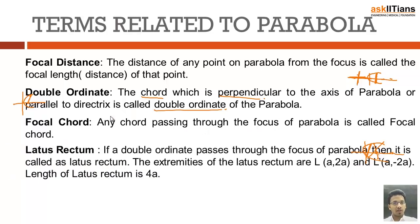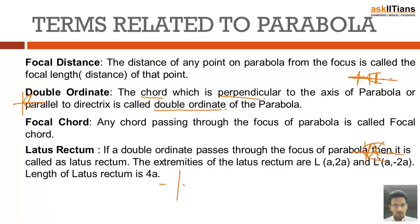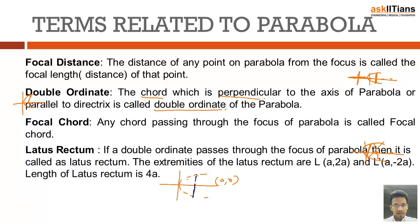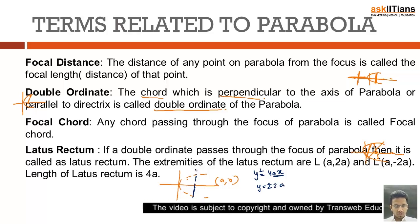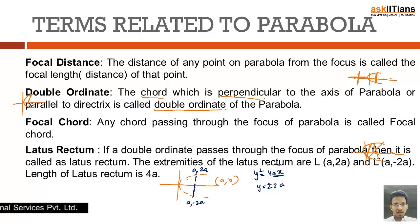The latus rectum is basically a focal chord that is also a double ordinate — it is perpendicular to the axis and passes through the focus. The focus is at (a, 0). Drawing a perpendicular through the focus and finding the intersection with y² = 4ax: if x = a, then y = ±2a. So the coordinates of the endpoints of the latus rectum are (a, 2a) and (a, −2a).